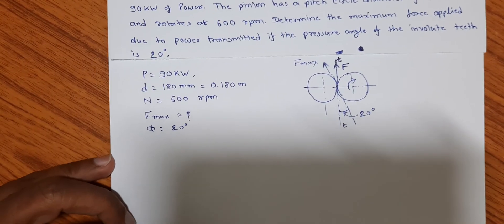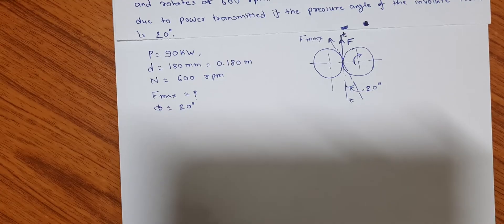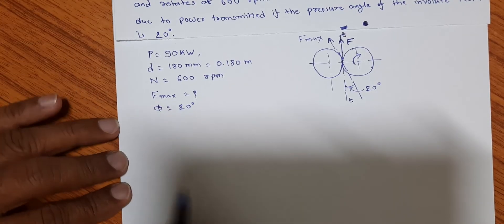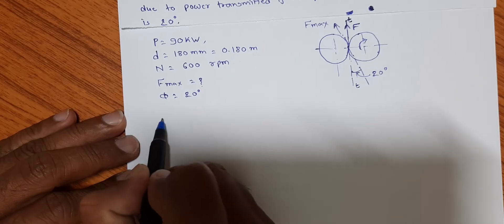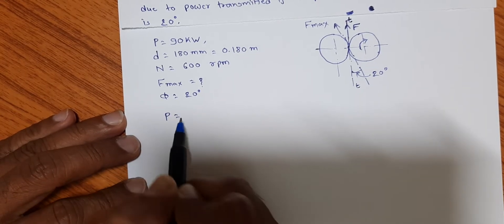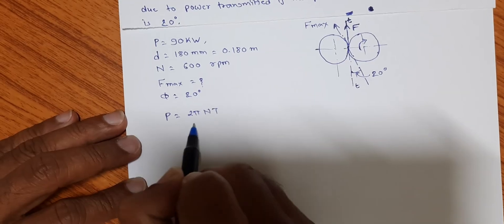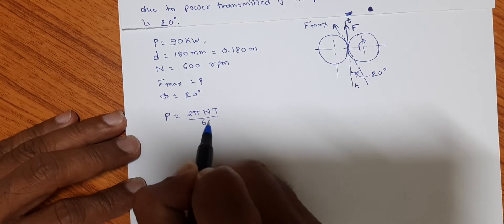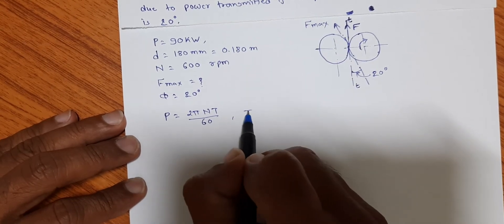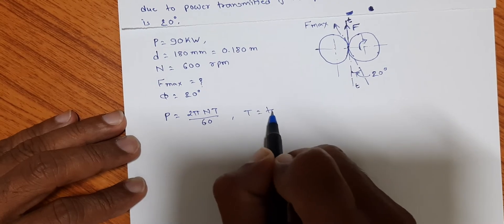So from the given data, we know the relation between power and torque: P is equal to 2πNT divided by 60, where capital T stands for torque.